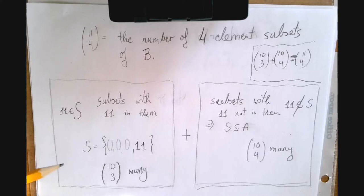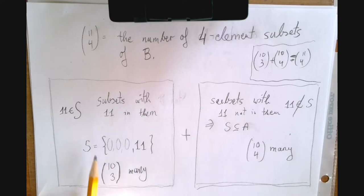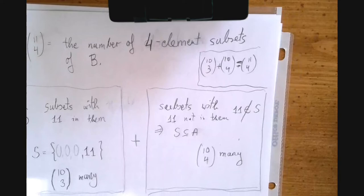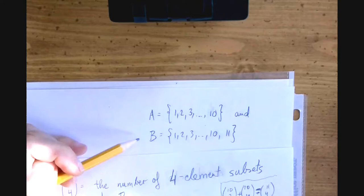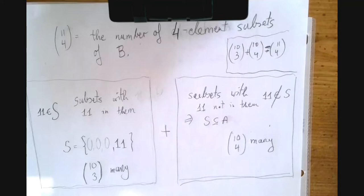We're looking for the number of 4 element subsets of B. In this particular case if 11 is already in there, when we're generating a subset we just have to pick 3 out of 10. So the number of 4 element subsets with 11 in them is this many. And the other one that doesn't have 11 in them, well then it's a subset of A. That's 10 choose 4 many. And so when we add these two we get that.